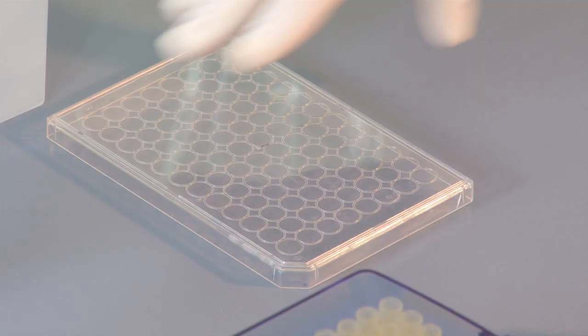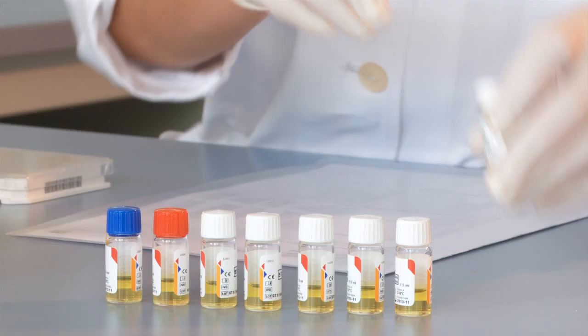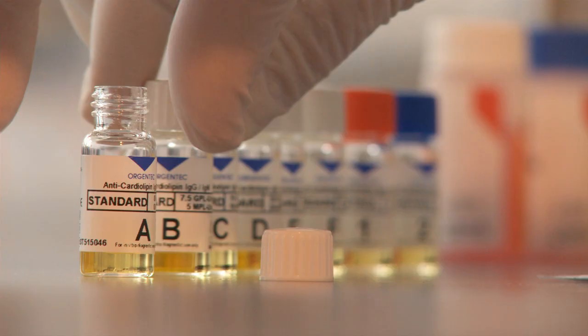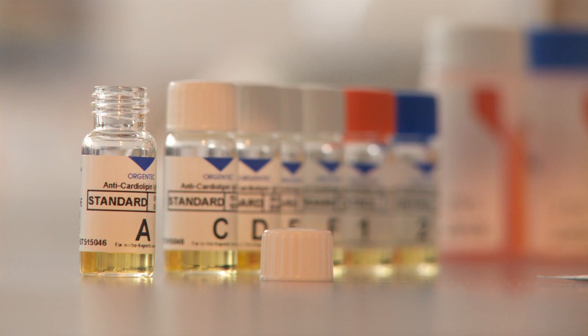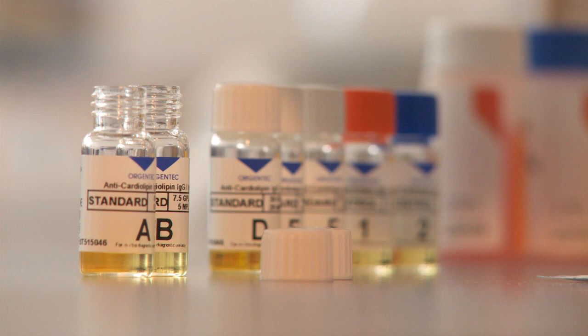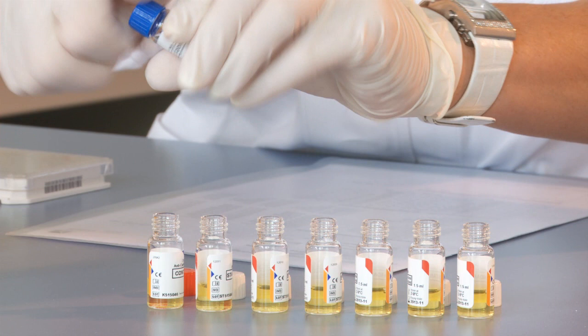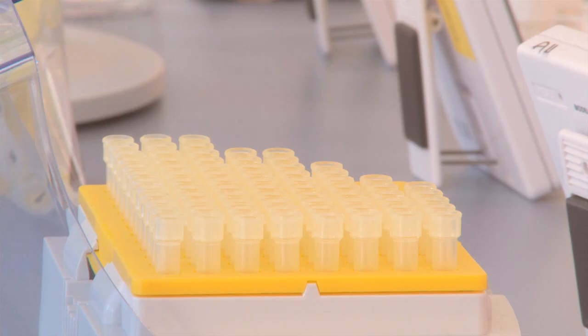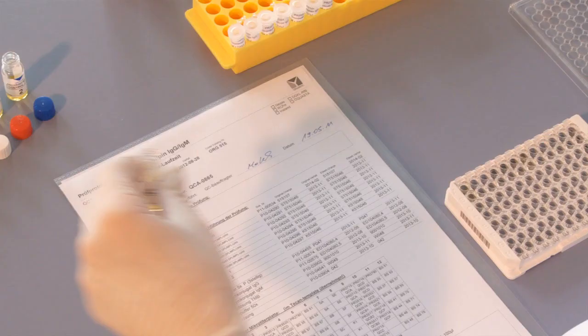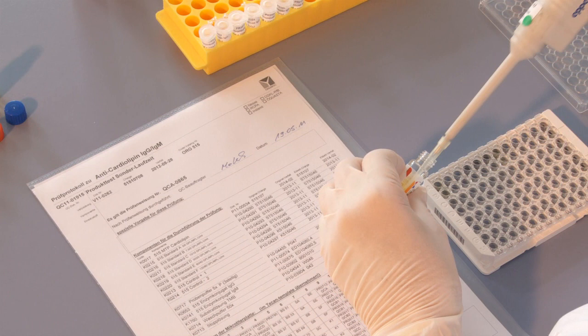Leftover strips can be returned to the protective cover and stored in the refrigerator for later use. The standard series, controls and samples are now pipetted into the plate according to the corresponding pipette diagram. Standard solutions A through F contain antibodies at defined concentrations. The negative control contains no antibodies. The positive control always gives a clear colour response when the test is carried out correctly. To avoid cross-contamination, the samples and controls must always be pipetted with fresh pipette tips.